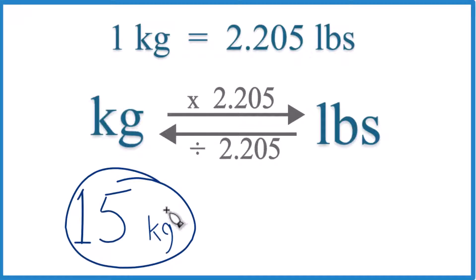Let's convert 15 kilograms to pounds. So, one kilogram equals 2.205 pounds.